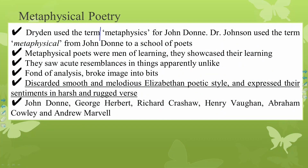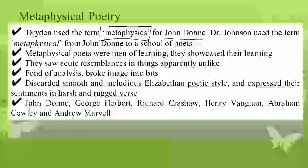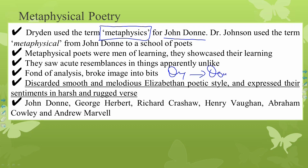During the Elizabethan age, we have metaphysical poetry and John Donne. Dryden used the term 'metaphysics' for John Donne, and Dr. Johnson used the term 'metaphysical' from John Donne to a school of poetry. Metaphysical poets were men of learning who showcased their learning and showed acute resemblances in things apparently unlike. Metaphysical poets include John Donne, George Herbert, Richard Crashaw, Henry Vaughan, Abraham Cowley, and Andrew Marvell.